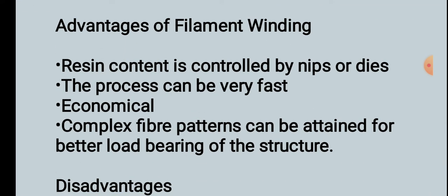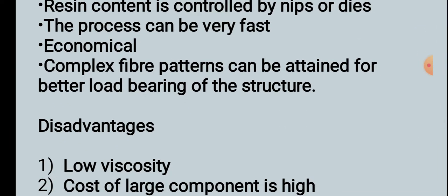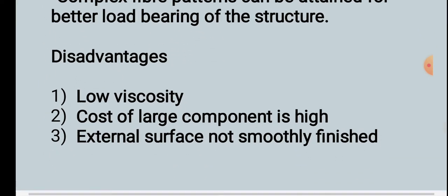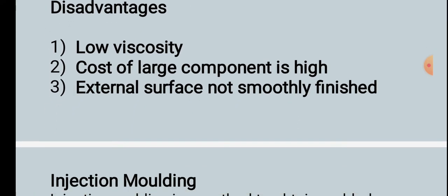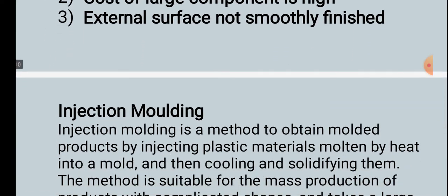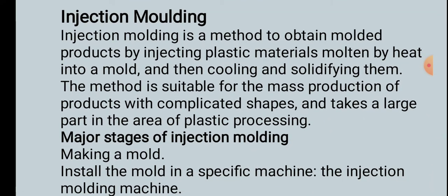Advantages of filament winding: resin content is controlled by nips or dies, the process can be very fast and economical, and complex fiber patterns can be attained for better load bearing of the structure. Disadvantages: low viscosity, cost of large components is high, and external surface is not smoothly finished.